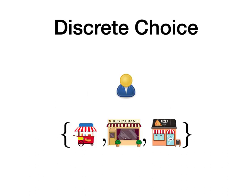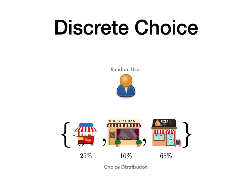Discrete Choice is what happens when a user has to make a choice among a set of finite possible options. In this case, the user might want to go to lunch and will choose the pizza place, whereas the gray user might prefer the hot dog place to the pizza place, then to the restaurant. From the point of view of the system, a random user coming in gives rise to a choice distribution, a probability distribution over the choices available to the users.